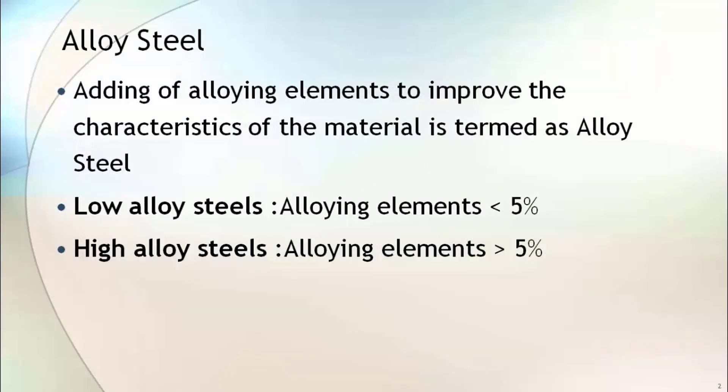What is alloy steel? As learned earlier, adding alloying elements to improve the characteristics of a material is termed as alloy steel. Alloy steel can further be classified as low alloy steel and high alloy steel. When the sum of the total alloying elements is less than 5% by weight, it is known as low alloy steel, whereas if it is greater than 5%, it is high alloy steel.